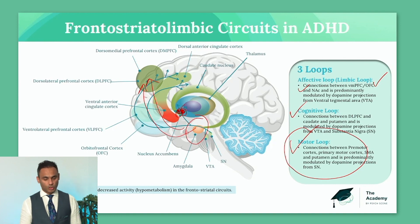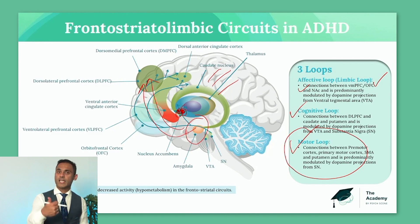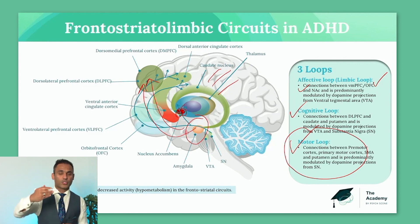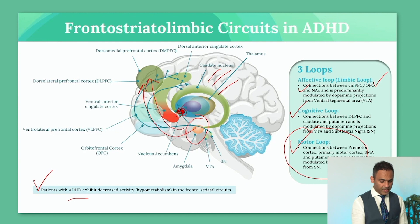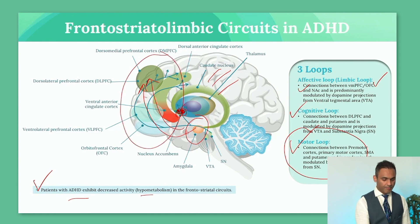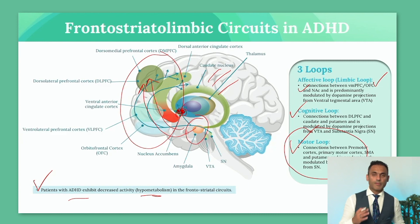Then we have the motor loop. The motor loop is important because the striatum is really where hyperactivity lives as one dimension. But hyperactivity can present in many other forms through the striatum — as tics, Tourette's, compulsions, obsessions, or excessive thought activity. Patients with ADHD exhibit decreased activity of the prefrontal cortex and hypermetabolism in the frontostriatal circuits. When you look at OCD, it's the opposite — you find hyperactivation in the frontostriatal circuits, very similar to what happens in tardive dyskinesia, except the mechanism is different.